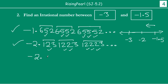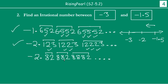Finally, a third irrational number between minus 3 and minus 1.5: we write minus 2.82, then 882, then 8882, and so on. We are increasing the number of 8s in each unit — four eights in the fourth unit, five eights in the fifth, and so on. This decimal expansion is non-terminating and non-repeating, so this is another irrational number between the integer minus 3 and the decimal number minus 1.5. These examples demonstrate the technique for finding irrational numbers between an integer and a decimal number.